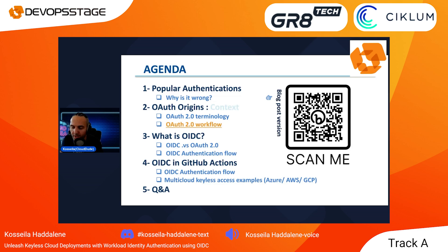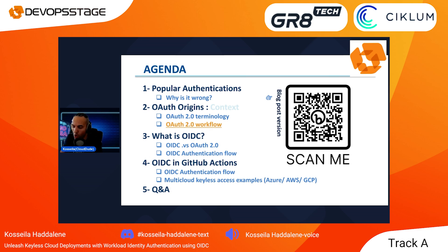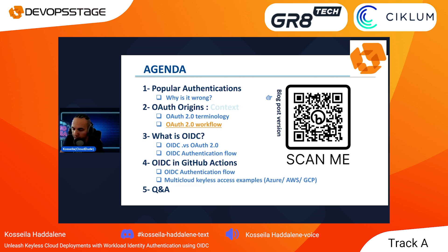In terms of agenda: first, a small introduction on available cloud communications and why it's wrong. In section two, we'll explore life before and after OAuth protocol creation, including terminology and the workflow. In section three, I'll dive into OIDC and what it brings on top of OAuth — the workflow, additional concepts, the tokens. In the last part, we'll describe how OIDC is used in GitHub Actions for each provider: GCP, Azure, and AWS, with a demo focus on AWS. And finally, a Q&A if we have time.